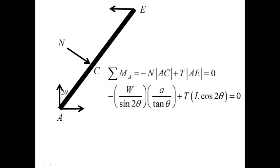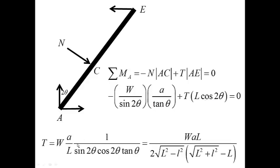So, if I substitute the value for N, it is W over sine 2θ, AC is a over tangent θ, and the arm is L cos 2θ. This gives me the result T equal to Wa over L divided by sine 2θ cos 2θ tangent θ.